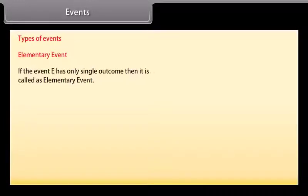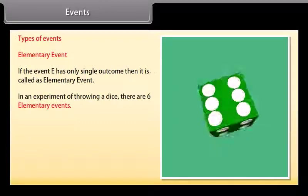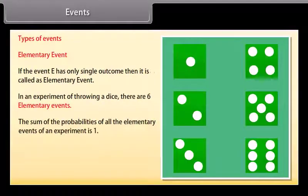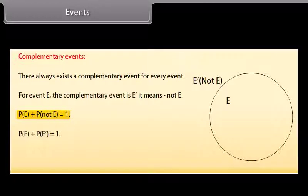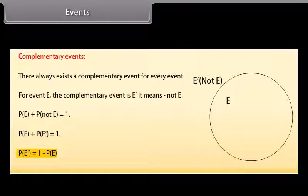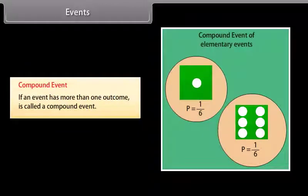Types of Events. Elementary event: If the event E has only a single outcome, then it is called an elementary event. In an experiment of throwing a dice, there are 6 elementary events. The sum of the probabilities of all the elementary events of an experiment is 1. Complementary events: There always exists a complementary event for every event. For event E, the complementary event is E' (not E). P(E) + P(not E) = 1, so P(not E) = 1 − P(E). Compound event: An event that has more than one outcome is called a compound event.